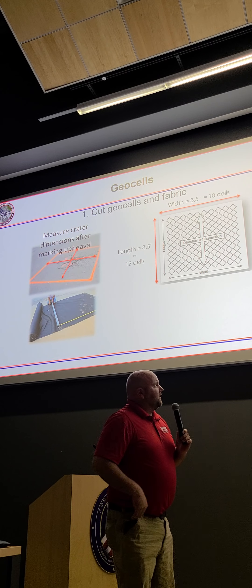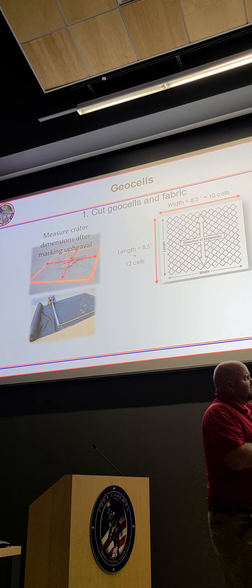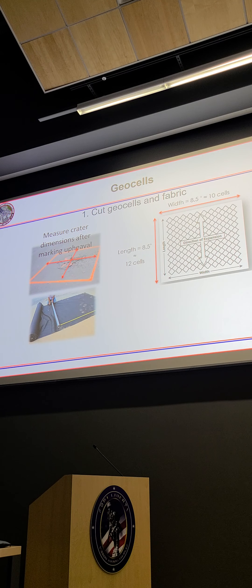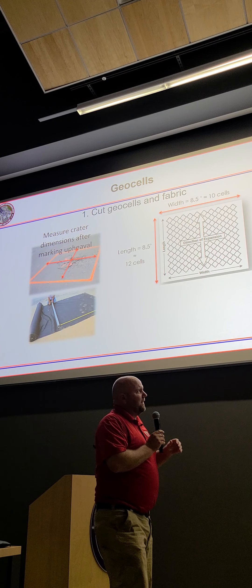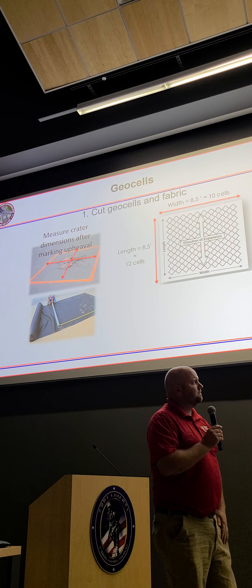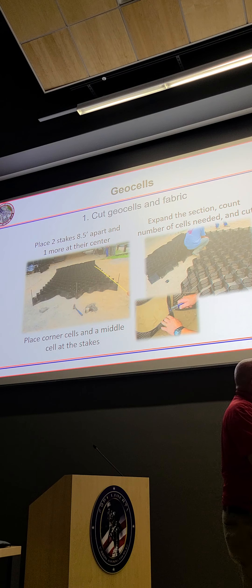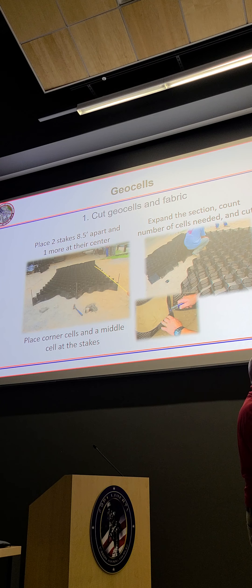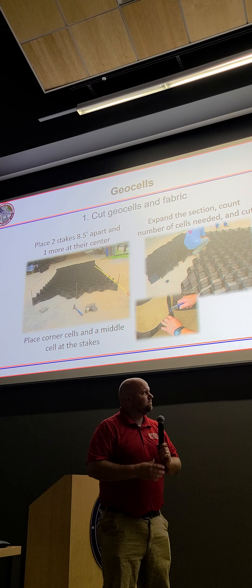Once you've got your marked crater, you've got to cut the geocells and your geotextile fabric. A lot of times we use 8.5 feet by 8.5 feet — obviously you'd tailor that to whatever size you have. For 8.5 by 8.5, it ends up being about 10 by 12 cells. Typically you cut it away from the repair, stake it down, place rebar in the corners, make sure you stretch it fully, count the number of cells, and then cut it with a razor knife.